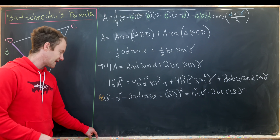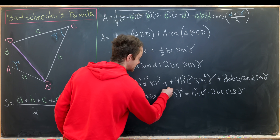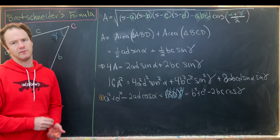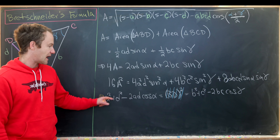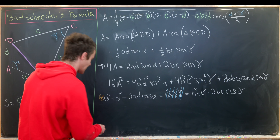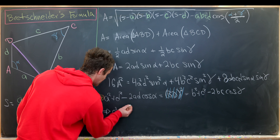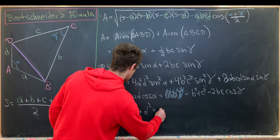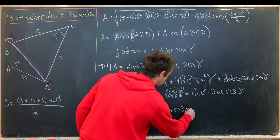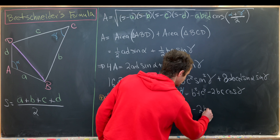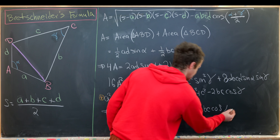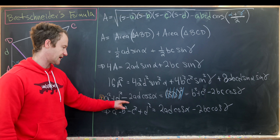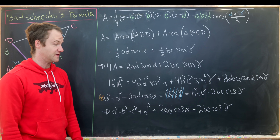We don't need the length BD itself, so we eliminate it. Moving terms around, we get the equation: a² − b² − c² + d² = 2ad·cos(alpha) − 2bc·cos(gamma). This comes from subtracting b² and c² to one side and moving the cosine term to the other.